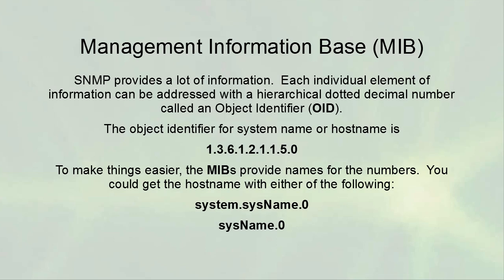There is a Management Information Base (MIB) for organizing the information SNMP provides. Each individual element of information can be addressed with a hierarchical dotted decimal number called an Object Identifier, or OID. The OID for system name or host name is 1.3.6.1.2.1.5, and the very first element — the system name — is appended with dot zero. If there are multiple names, they increment as dot one, dot two, and so on.